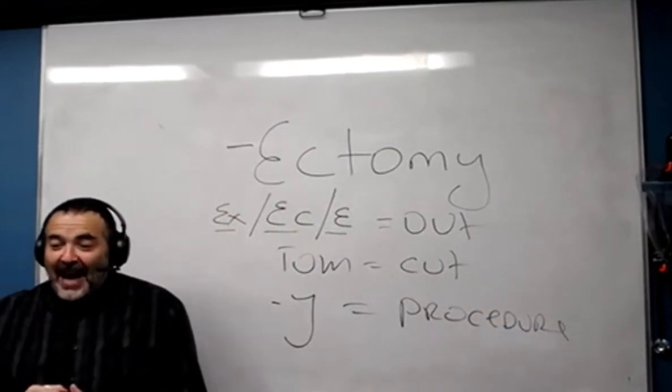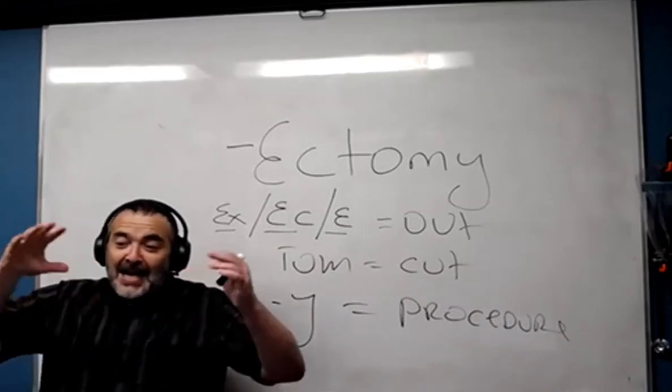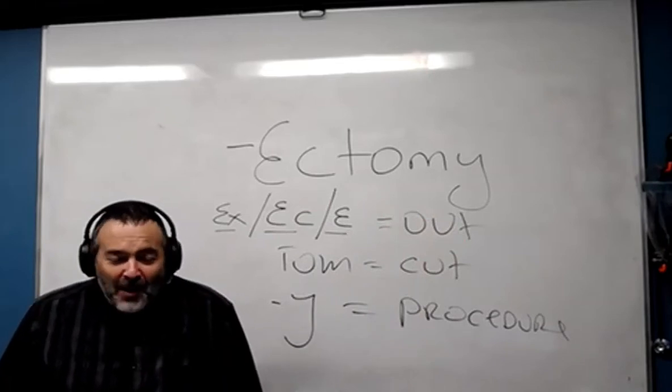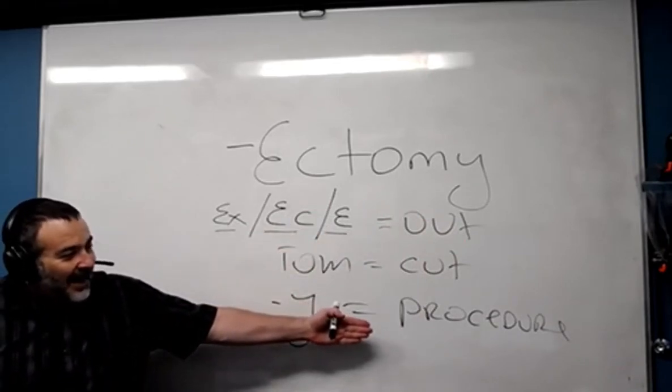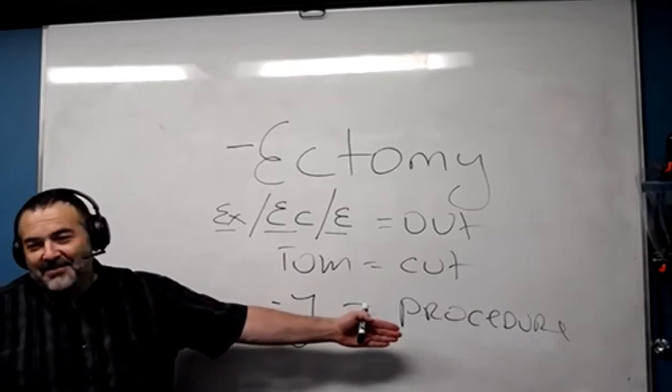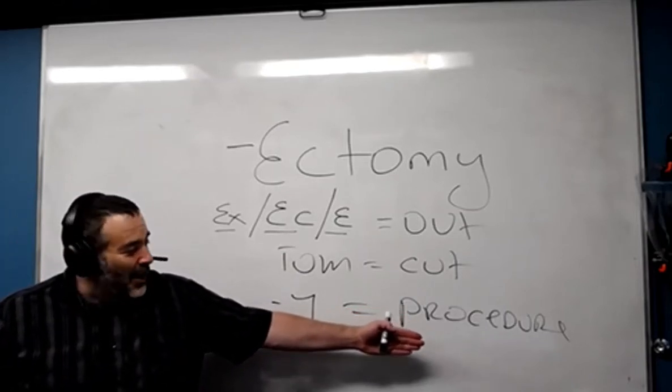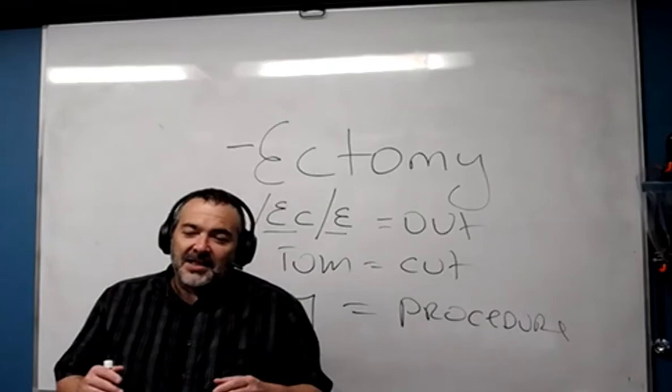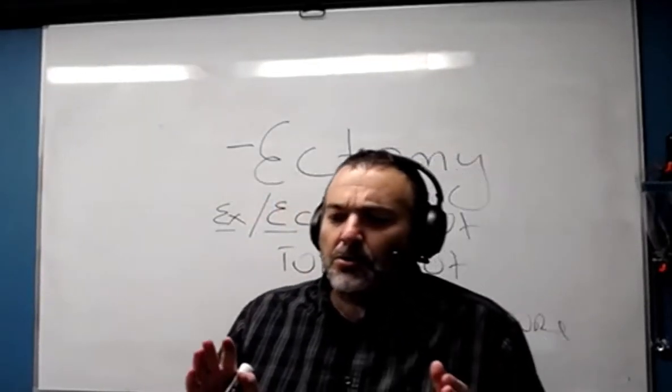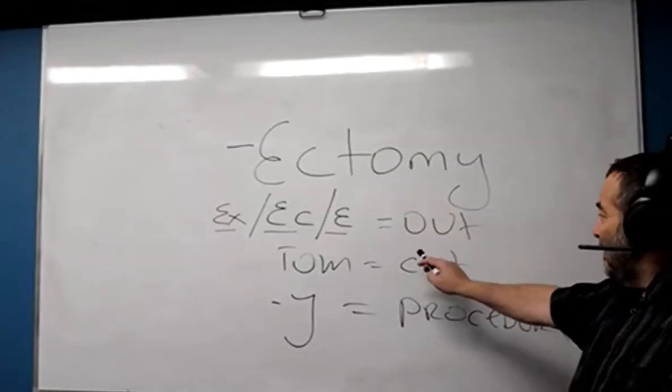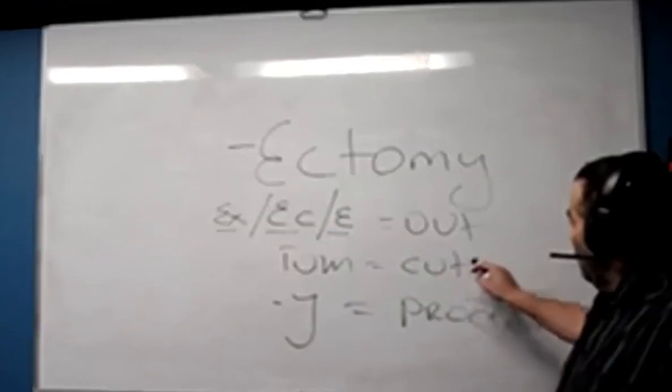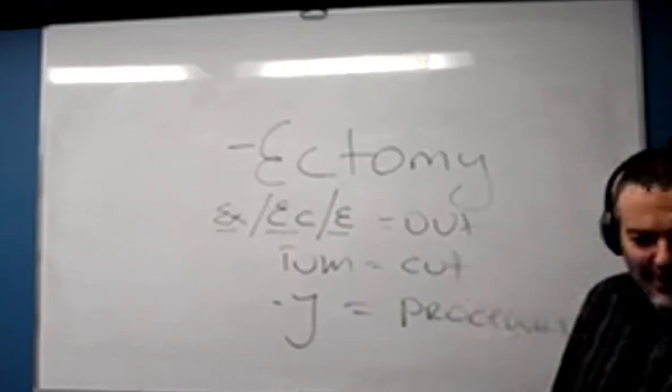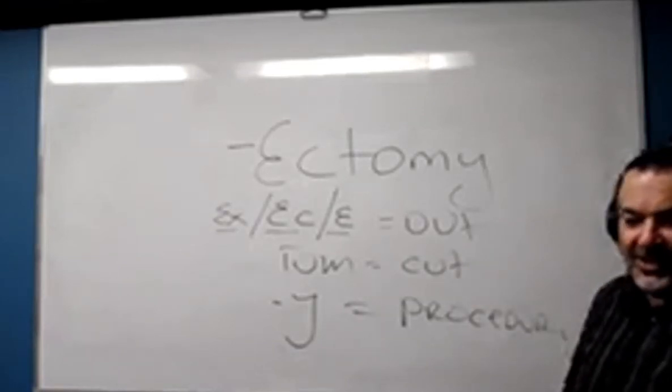So every time you see suffix ectomy on the end of any kind of large medical term, what will that mean to you? Vasectomy is very good, but procedure to cut out. Yes, in medical books they tell you that ectomy is a suffix that means a surgical removal of. Nonsense. Yes, it is a surgical removal of, but if you break down the suffix it tells you why. Procedure to cut out. Of course everything we cut out is surgical, okay? We don't cut anything out that's not surgical.